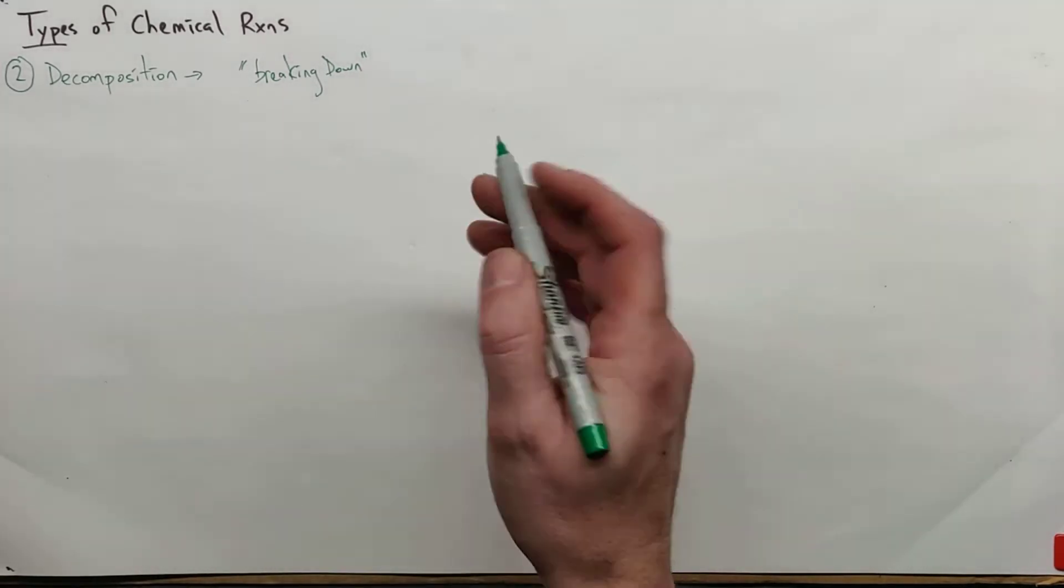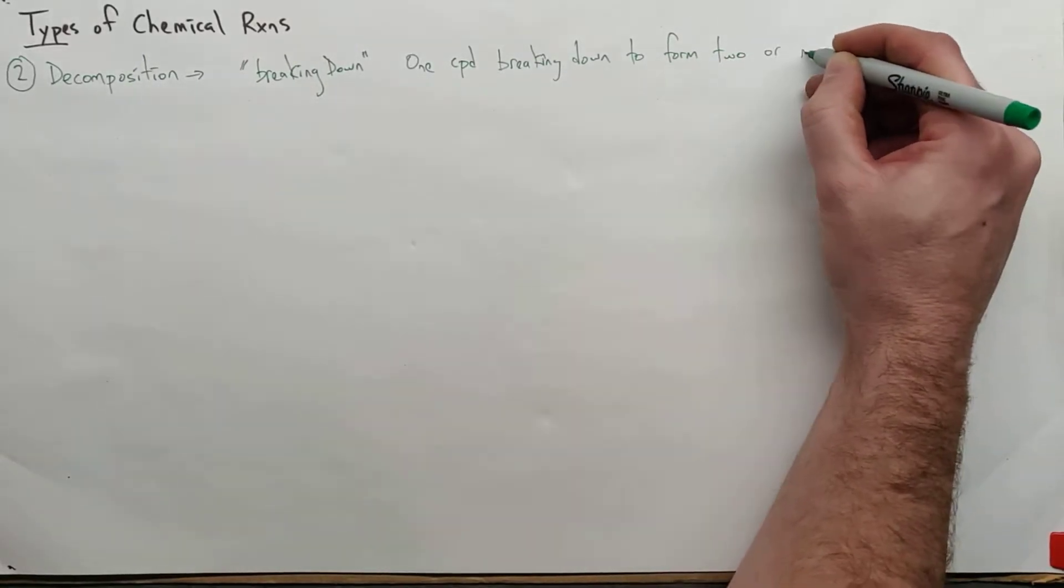Now, for specific terms, synthesis was two or more species combining to make one compound, decomposition has to be the opposite. We're going to say you have one compound breaking down to form two or more species. And as a quick reminder, our general form for synthesis was A + X goes to AX. So our general form for decomposition must be the reverse: AX turning into A + X.